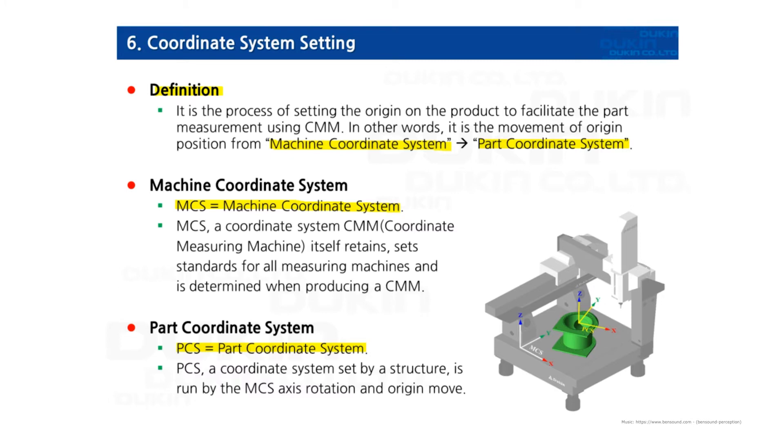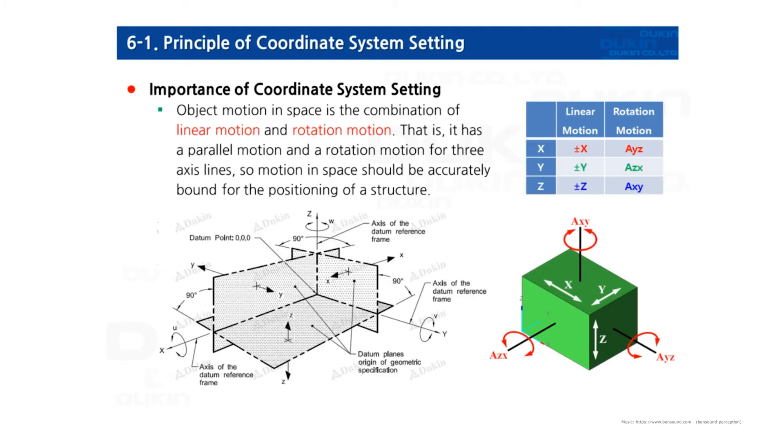Let's move on to the next slide. Let's take a look at the principle of coordinate system setting. All kinds of parts have six different movements. This is called six degrees of freedom.